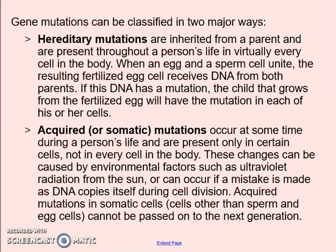The other type are acquired or somatic mutations, and these occur later on in someone's life and are only present when there is a cause of an environmental factor. For example, radiation is going to cause some sort of change in the DNA, which would result in a mutation.